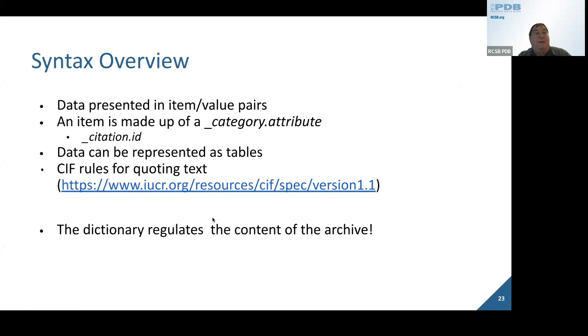For the next few minutes, I'm going to talk about the syntax of PDBx-mmCIF. The data are presented in item-value pairs. We describe an item as made up of a category and an attribute. For example, citation would be the category, ID would be the attribute. Data can be represented in tables, as you'll see in the next few slides. There are various rules for quoting text—it is possible to have single quotes, double quotes within a text string. We follow the same specifications as CIF. The important thing to remember is that our dictionary regulates the content of the public archive.